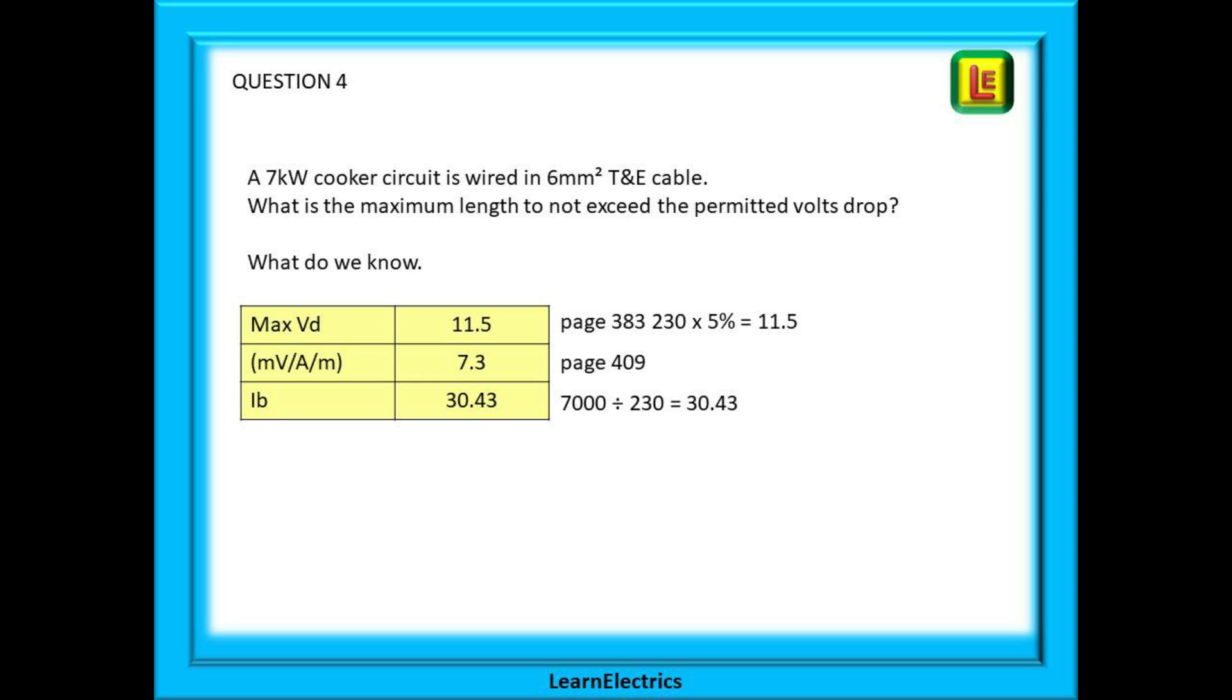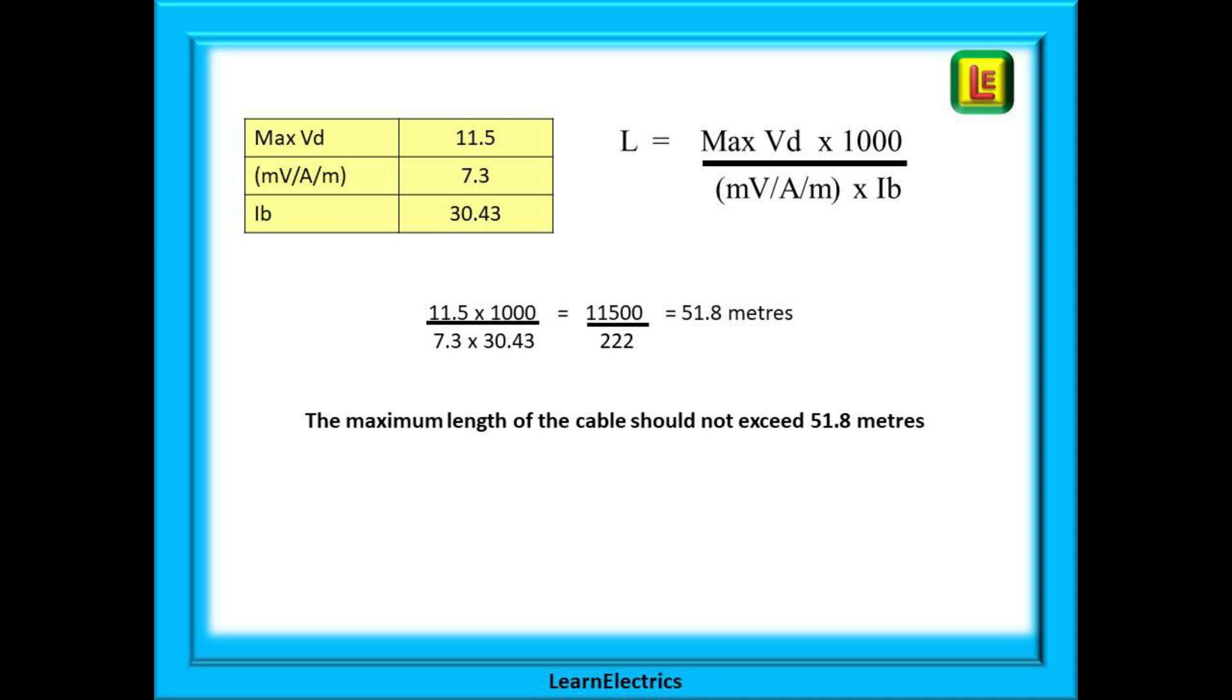Question 4. A 230 volt seven kilowatt cooker is to be wired in six millimeter twin and earth cable. What is the maximum length of cable to not exceed the maximum permitted volts drop? Again, write down what we know as we find it. The maximum volts drop is found on page 383: 230 volts times five percent is 11.5 volts. Page 409 is where we find the mV/A/m number for six millimeter cable, and this is 7.3. And Ib, the design current, is 7000 watts divided by 230 volts to give us 30.43 amps. Run that through the formula and we have 11,500 on the top divided by 222 on the bottom. Our maximum length is 51.8 meters.